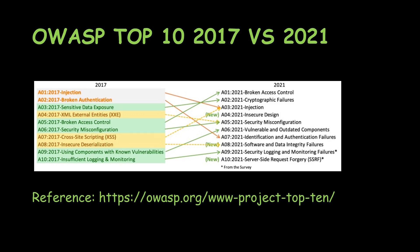Cross-Site Scripting is now considered part of Injection, so it's in position 3. Broken Authentication has moved from position 2 to position 7 in 2021, now called Identification and Authentication Failures. Sensitive Data Exposure has become Cryptographic Failures, at position 2. XML External Entities has merged with Security Misconfiguration, coming to position 5 in 2021 as Security Misconfiguration.